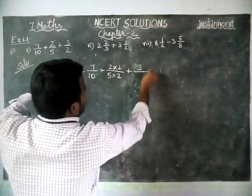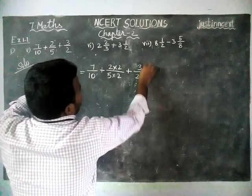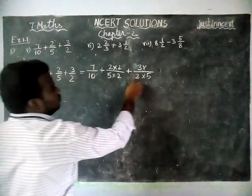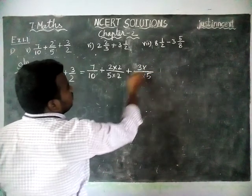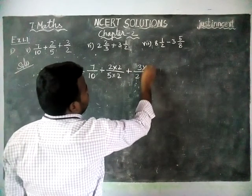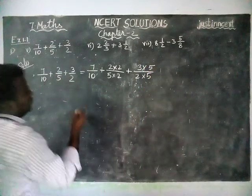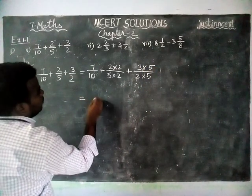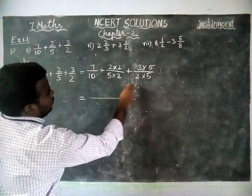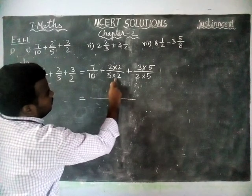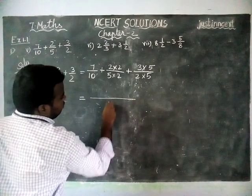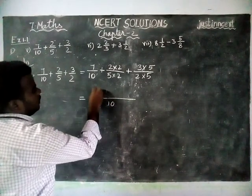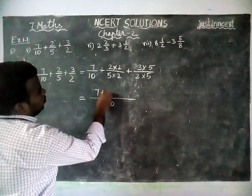Plus 3/2: if we multiply by 5 we will get 10, so 2 fives are 10. The numerator is also multiplied by 5. Now everything has a common denominator of 10, 10, 10. We have written common denominator 10: 7 plus...